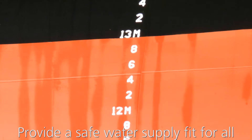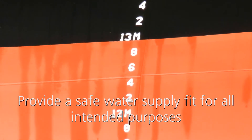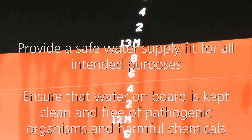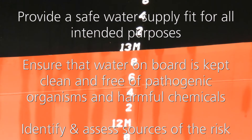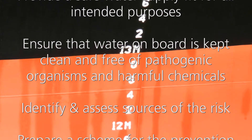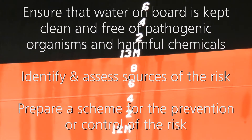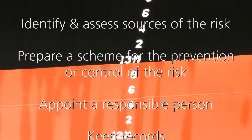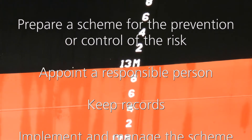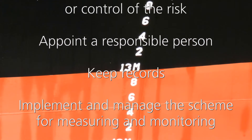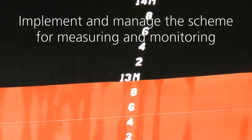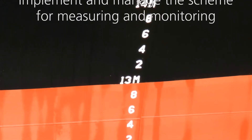The ship owner's duties are: provide a safe water supply fit for all intended purposes; ensure that the water on board is kept clean and free of pathogenic organisms and harmful chemicals; identify and assess sources of risk; prepare a scheme for the prevention and control of the risk; appoint a responsible person on board; keep records; and implement and manage the scheme for measuring and monitoring. All of this is summarized in a water safety plan.